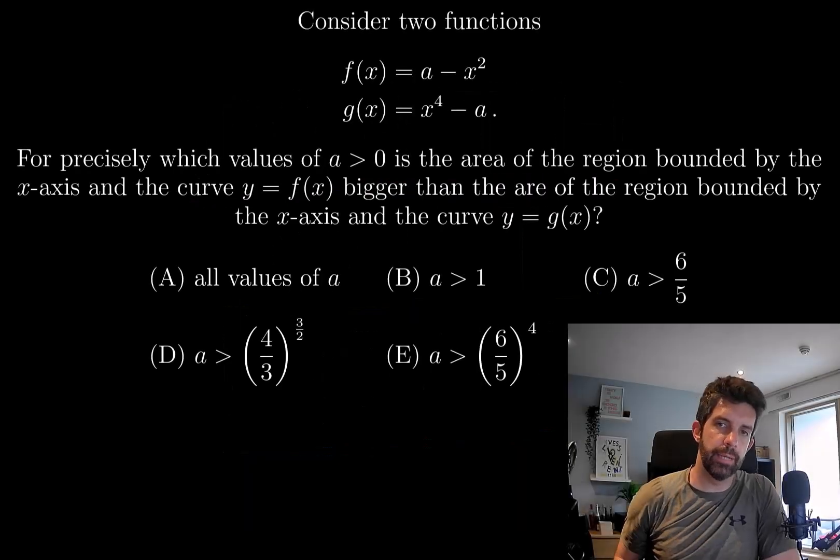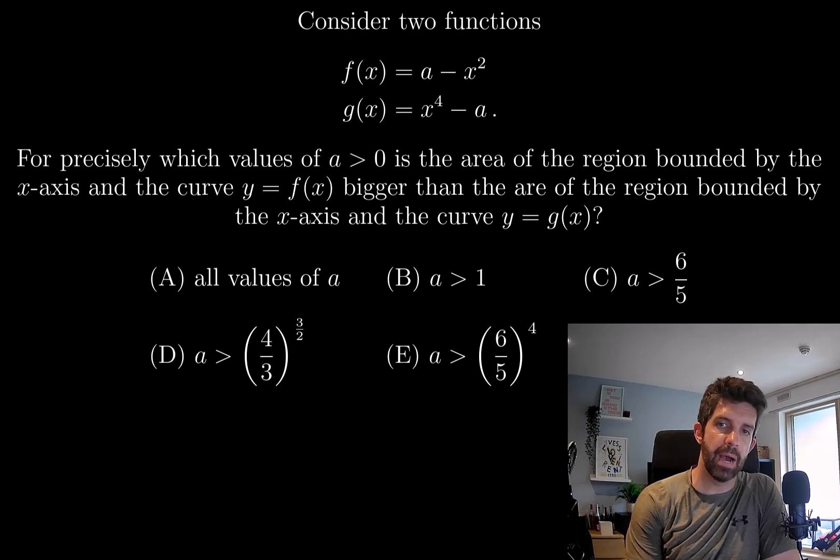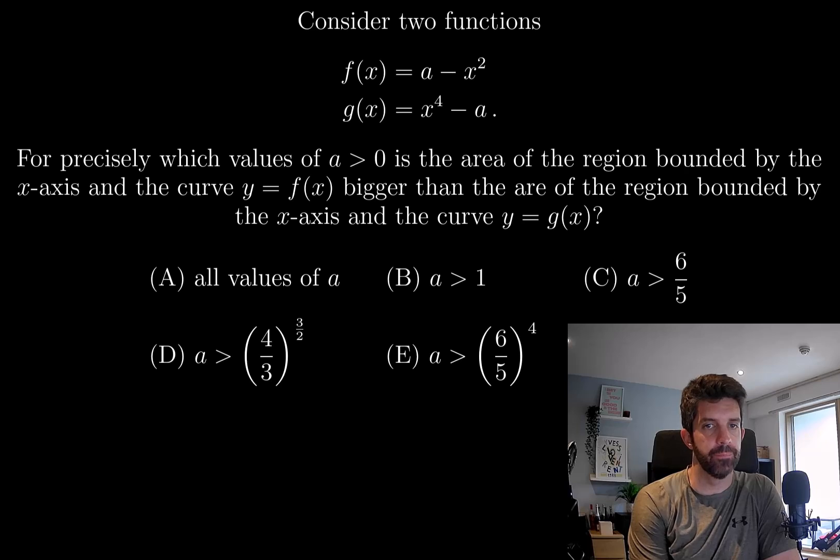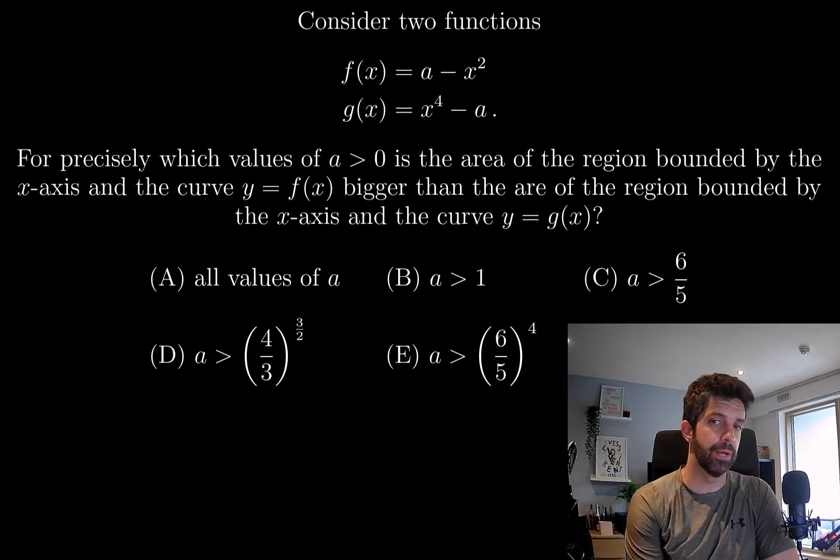Consider two functions: f of x equals a minus x squared, and g of x equals x to the 4 minus a. For precisely which values of a greater than 0 is the area of the region bounded by the x-axis and the curve y equals f of x bigger than the area of the region bounded by the x-axis and the curve y equals g of x?